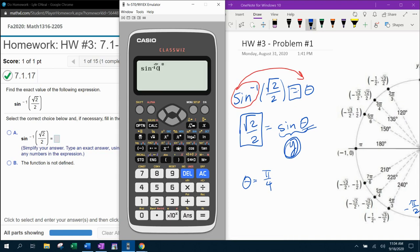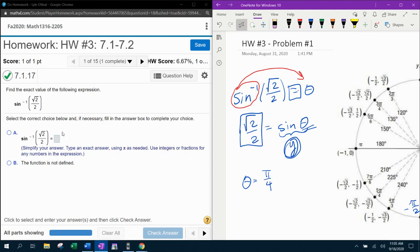So we can input inverse sine of square root of 2 over 2. And as long as you're in radian mode, it's going to give back a radian angle there. Pi over 4 verified.